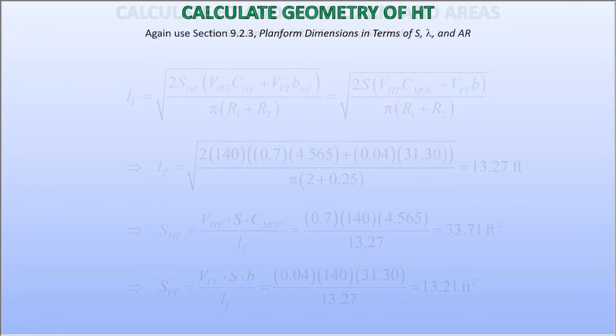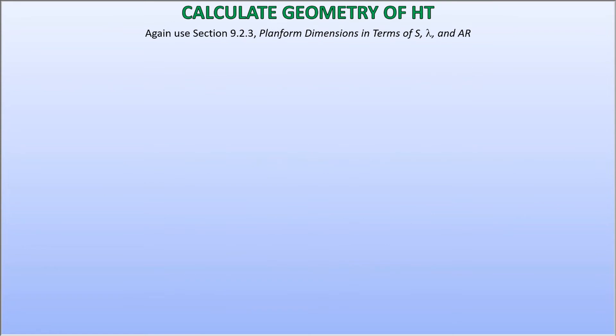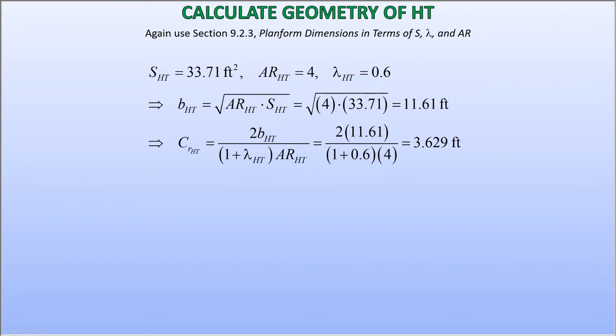We now go back to section 9.2.3 to estimate the span, root and tip chords for the horizontal and vertical tails. Starting with the horizontal, a common aspect ratio is about 4. I'm going to use the same taper ratio for the horizontal as that of the wing for a simple reason, aesthetic harmony. The resulting span for the horizontal is 11.61 feet, root chord is 3.629 feet and tip chord is 2.177 feet.